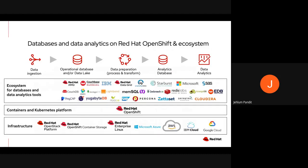Red Hat OpenShift is equipped to support you in your journey with databases and data analytics workloads. We have a broad set of ISV ecosystem tools and strategic integrations that will help you simplify and manage databases and data analytics. All of these tools are enabled by Red Hat OpenShift, and it supports all kinds of footprints such as AWS, Microsoft Azure, IBM Cloud, Google Cloud, and Red Hat OpenStack Platform. OpenShift Container Storage can also span across various clouds and footprints, all built on a strong foundation of Red Hat Enterprise Linux.